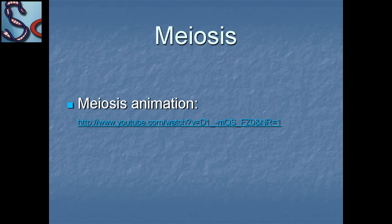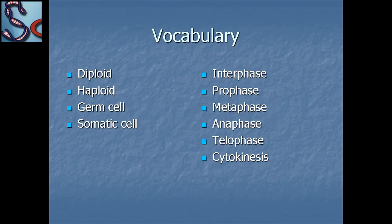This is a video of meiosis — go through and watch it. Now, vocabulary words for meiosis: diploid, haploid, germ cells, somatic cells, interphase, prophase, metaphase, anaphase, telophase, and cytokinesis.